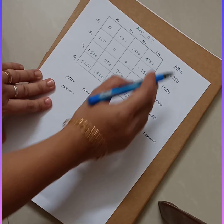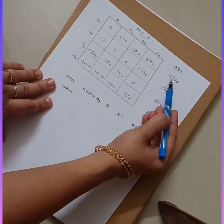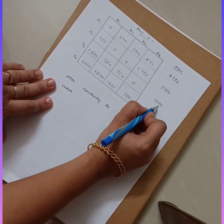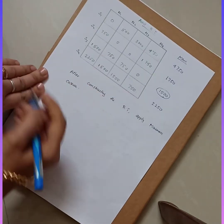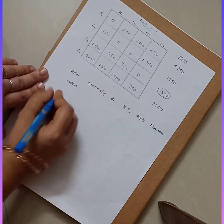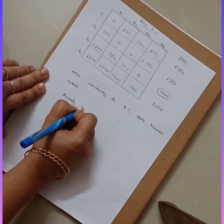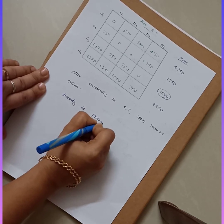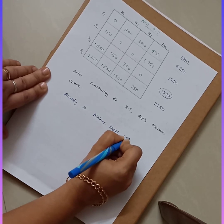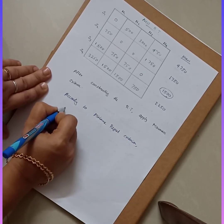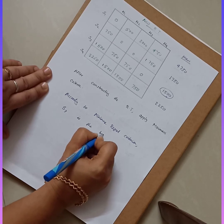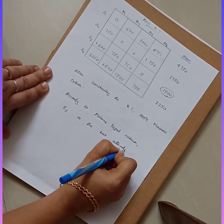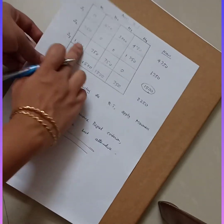Take the minimum out of the maximum values: 4750, 1750, 1500, 2250. The minimum value is 1500, which corresponds to S3. Therefore, according to the minimax regret criterion, S3 is the best alternative for implementation.